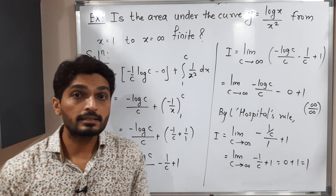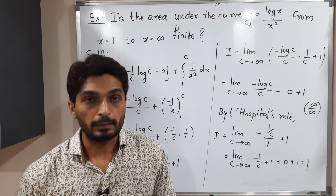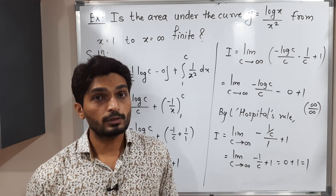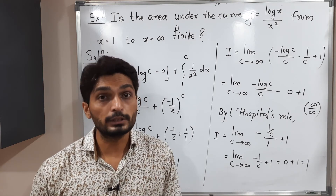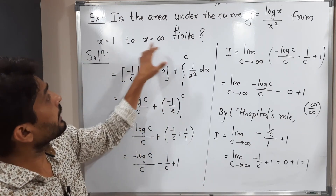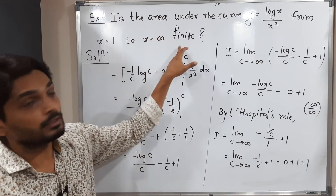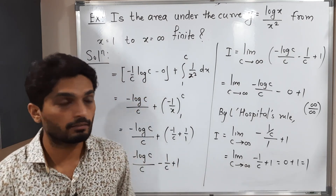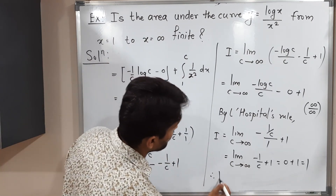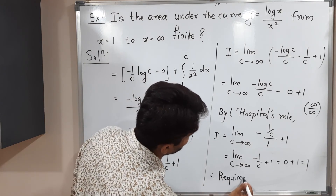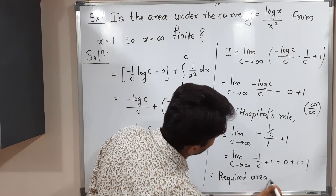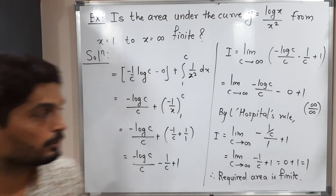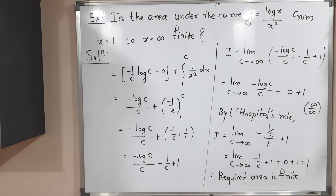The value of this improper integral is finite, so the given improper integral is convergent. The area under the curve has a finite value. Therefore, the required area is finite. This is our final answer.